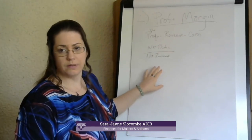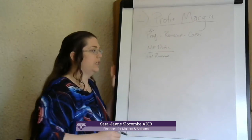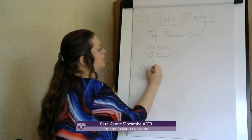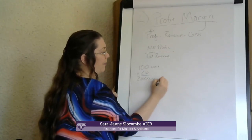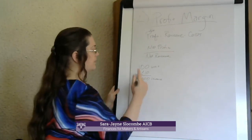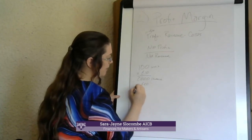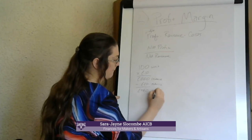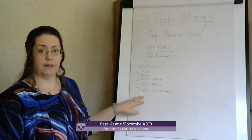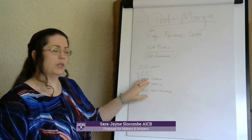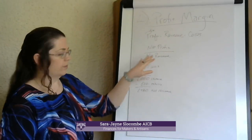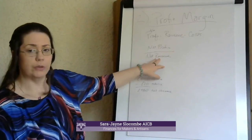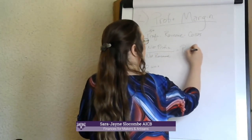If you had any returns, that changes your revenue. So if you'd sold 100 units at £10 — revenue of £1,000 — but had two returns and refunded £20, your net revenue is £980. Returns are just about the only thing you'd take off revenue to get to net revenue. If you have none, your net revenue is the same as your revenue. You just divide your profit by your revenue and that gives you your profit margin.